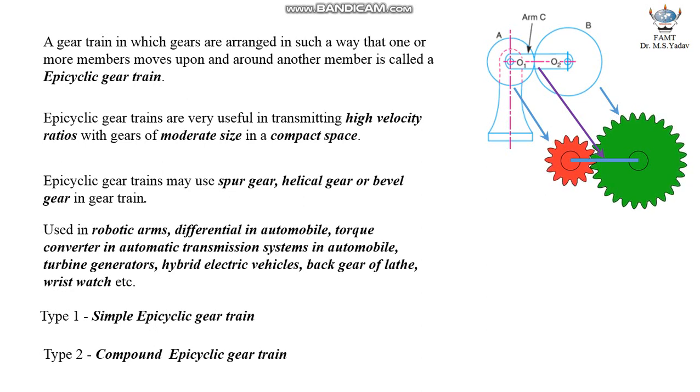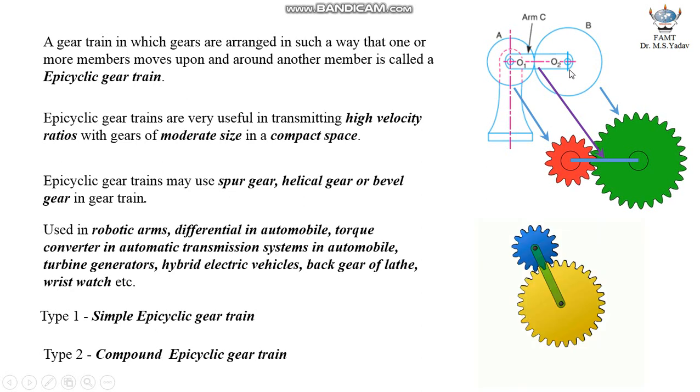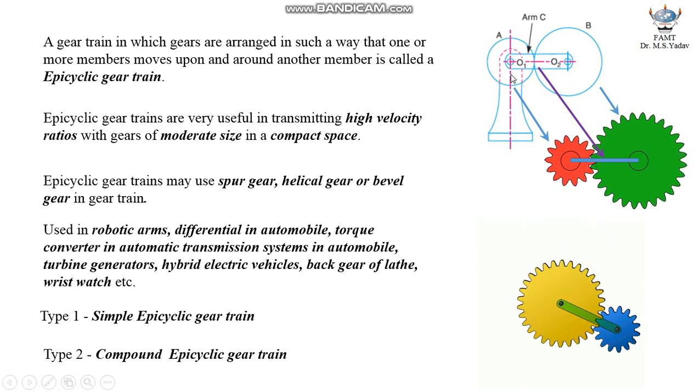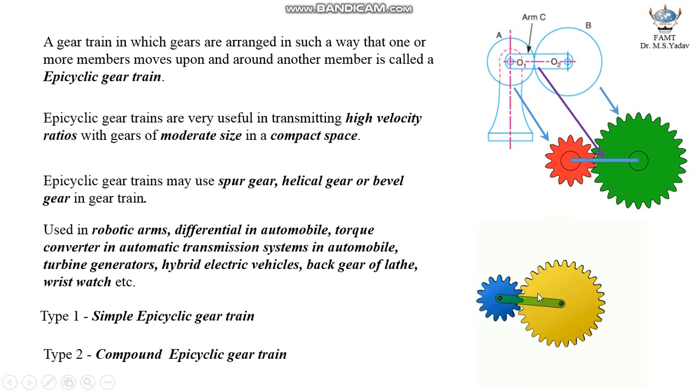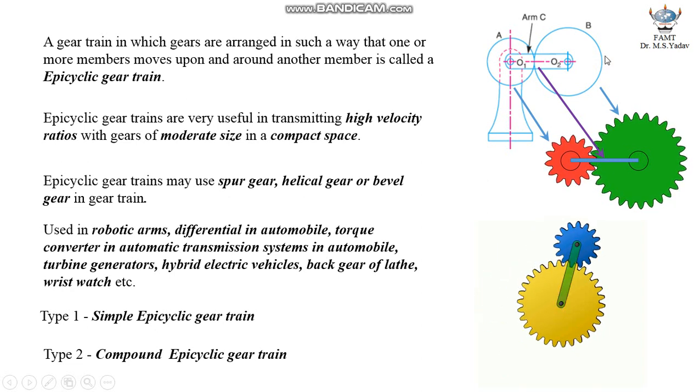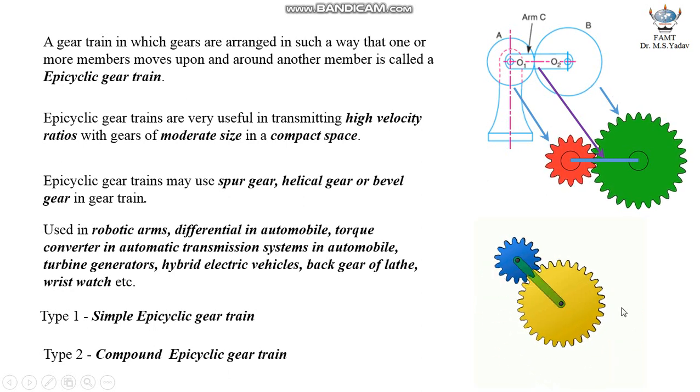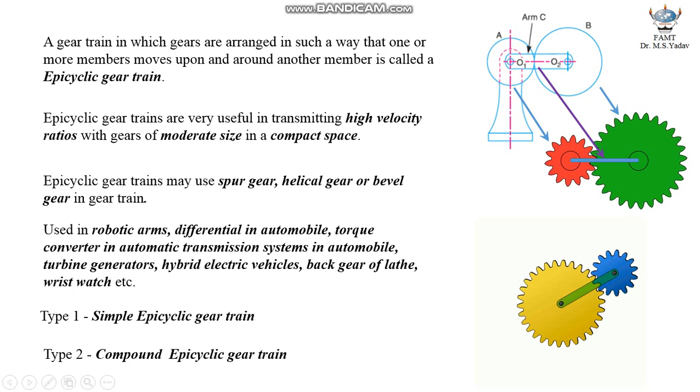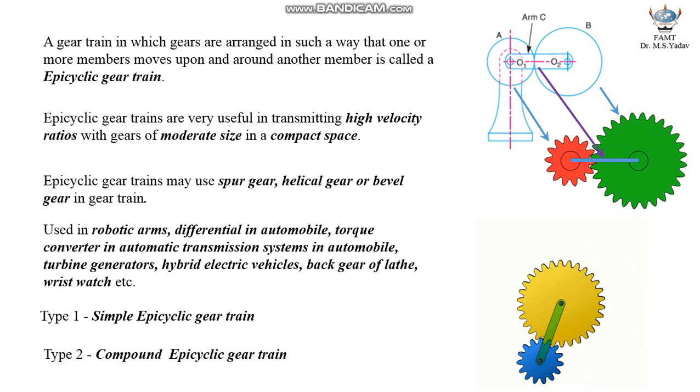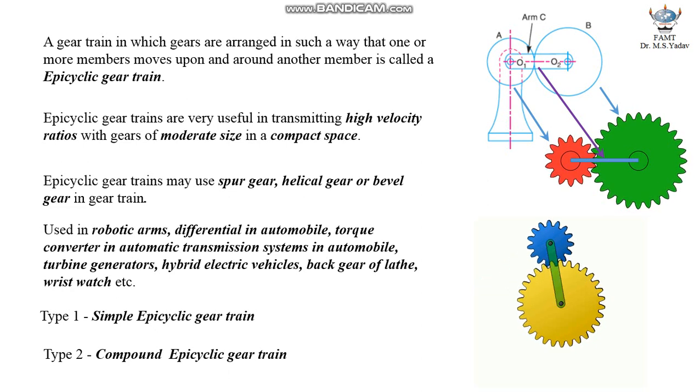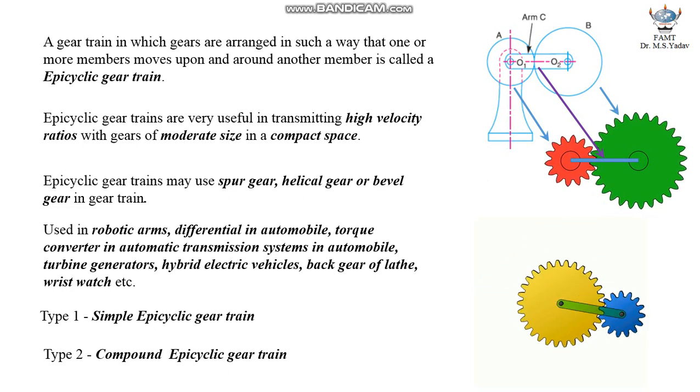Now, if arm is freed and gear B is made to move upon and around gear A, this kind of motion can be seen. Well, gears shown in animation and in picture are of different sizes. However, motion will be one and the same. In this case, gear A may be driver and output motion can be taken from arm. This one is the second gear ratio.